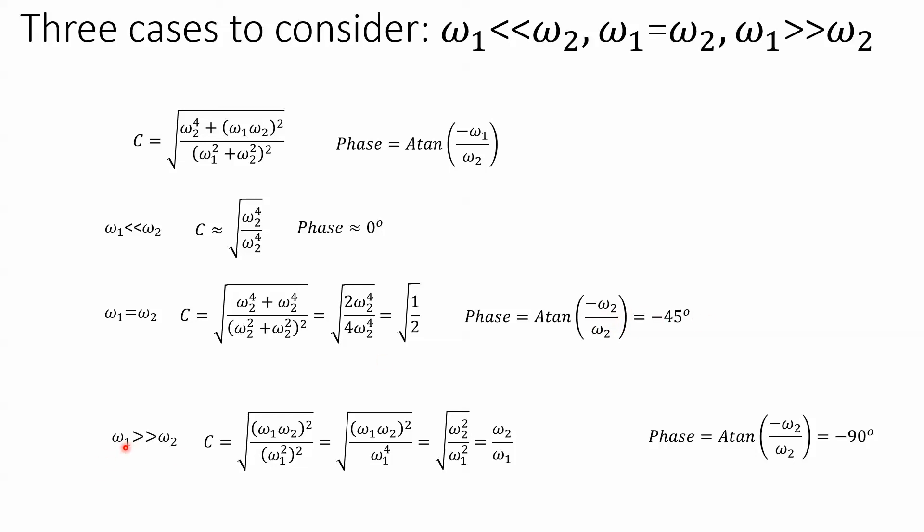When ω₁ is a lot bigger than ω₂, meaning it's a lot faster than the cutoff frequency, we actually get this ratio, the frequency of the filter divided by the frequency of the sine wave, and this becomes minus 90. That should be, this should still be minus 1. What it is, is this is going towards infinity, this is staying constant, and so it should go to minus 90.